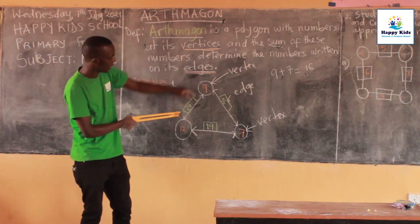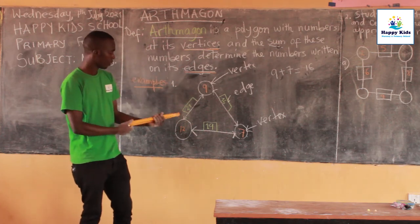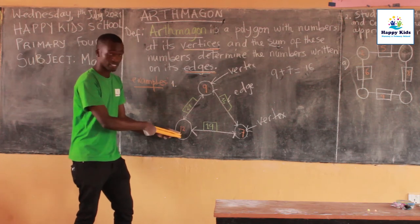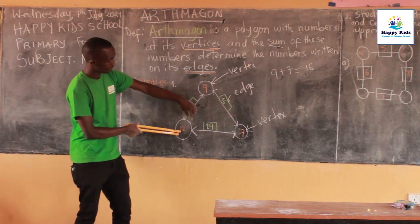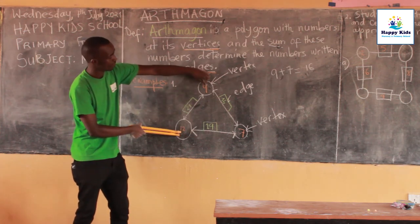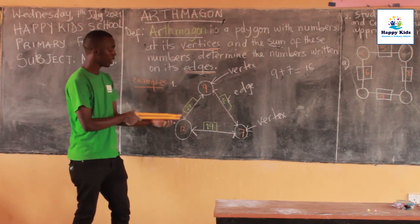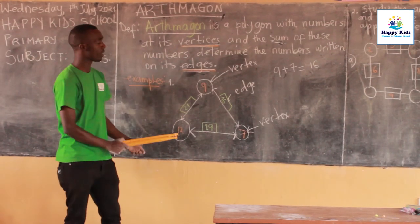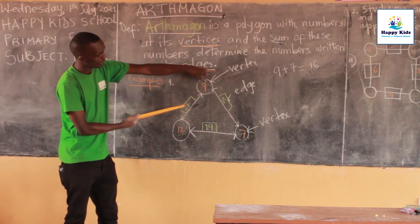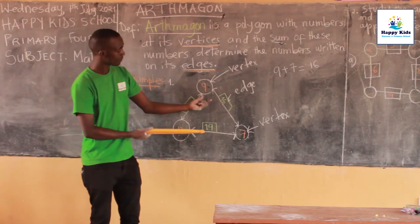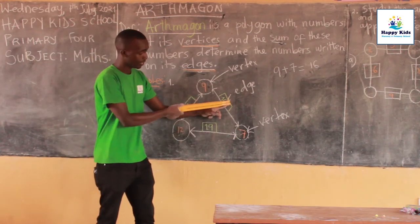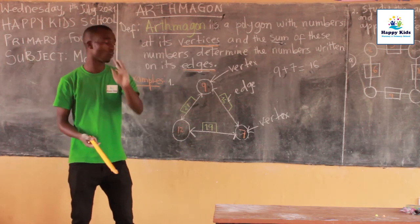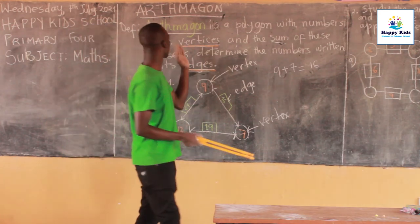Now let's understand how we get the number at this edge. We need to add numbers which are found in the vertices of this side — the point where two sides are meeting is called a vertex. When you add numbers in this vertex and numbers in this vertex, you get the sum which goes at the edge. For our Alphimagon, I can see that the edge value is found from taking numbers nine and seven — nine plus seven equals sixteen. This is what we call an Alphimagon.